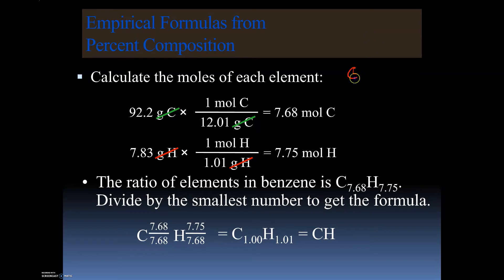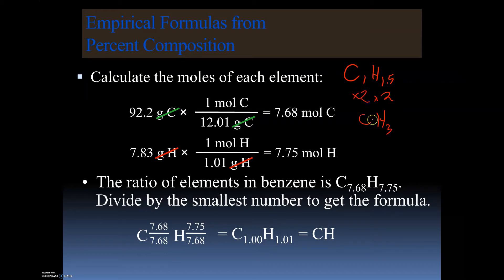What if we had a situation where carbon gave 1 and hydrogen gave 1.5? Since 1.5 is not a whole number, we find a multiplier to make both values whole. We'd multiply by 2, because 1.5 × 2 = 3. Whatever you do to hydrogen you also do to carbon, giving an empirical formula of C2H3. But in our current example, we didn't have that problem — the empirical formula was CH.